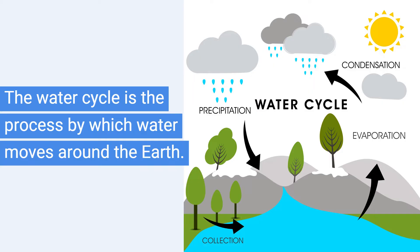When the clouds get too heavy, the water falls back to earth as rain, snow, or hail — which is called precipitation. The water then collects in rivers, lakes, and oceans, and the cycle starts all over again. This cycle is important because it provides fresh water for plants, animals, and people.